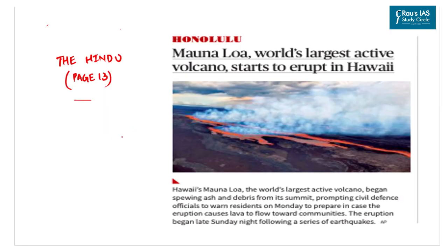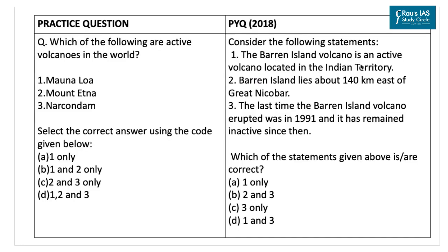The next article in The Hindu talks about Mauna Loa volcano, the world's largest active volcano, which has started to erupt in Hawaii, United States of America. UPSC under the geography section has previously asked questions related to various geographical features and locations related to volcanoes, including a question in 2018 about the Barren Island volcano in Indian territory. A practice question can be framed in this regard.